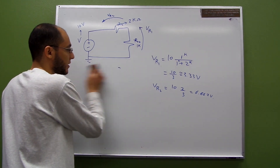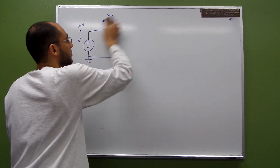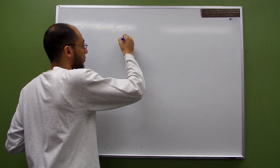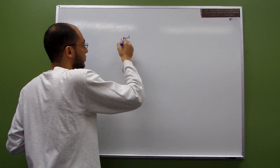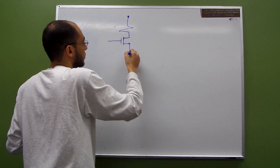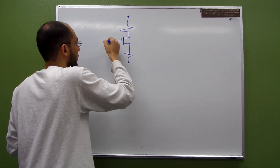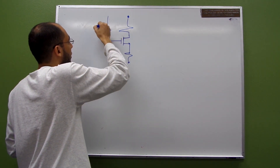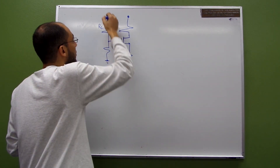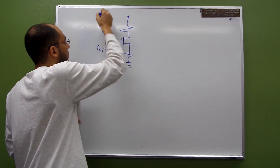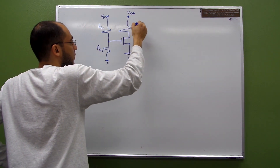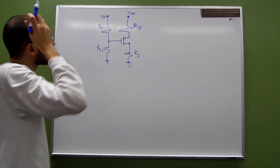Now let's apply this to a MOSFET transistor circuit. The circuit has VDD, resistors RG1 and RG2, and the MOSFET with RD and RS.